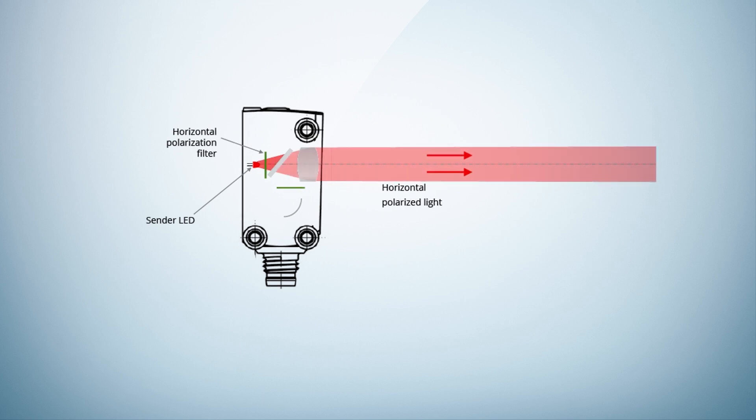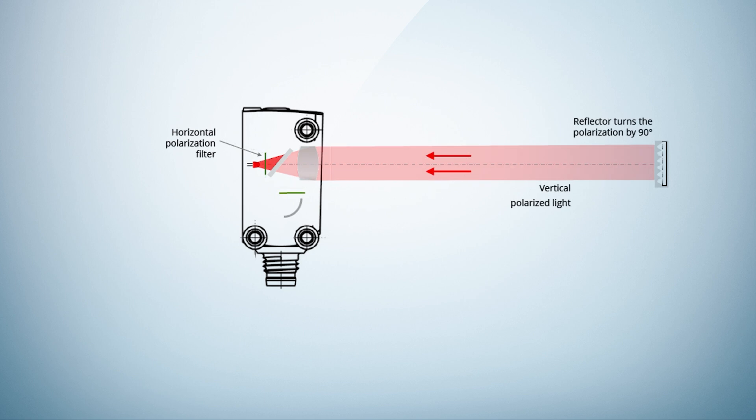Sender light passes through a polarization filter, which polarizes the light horizontally. The polarized light is reflected by the reflector. During this process, the polarization is rotated by 90 degrees. The light is now vertically polarized.